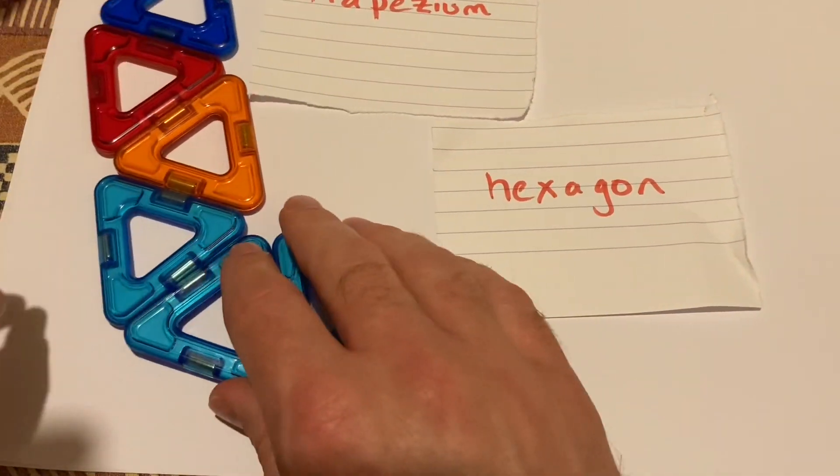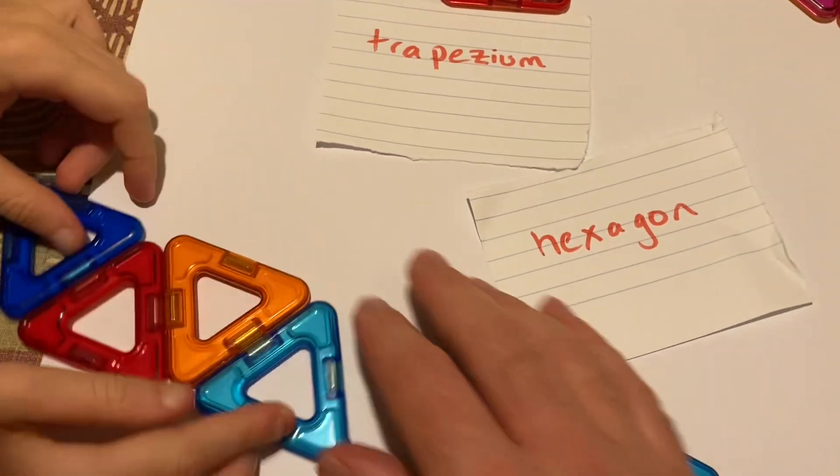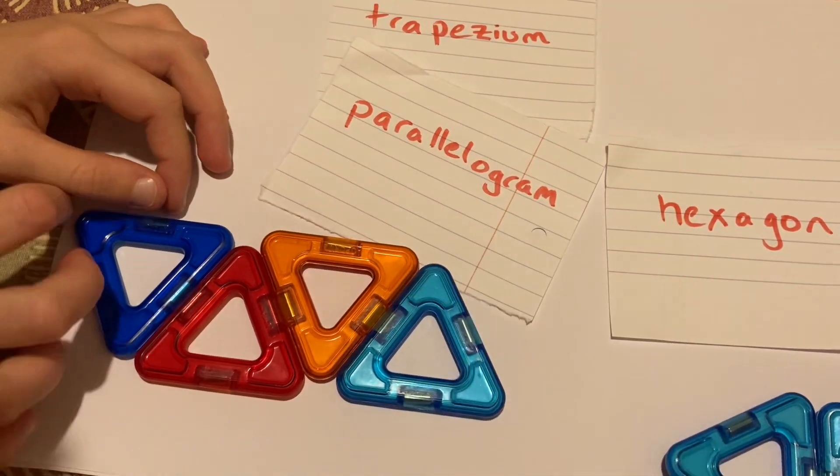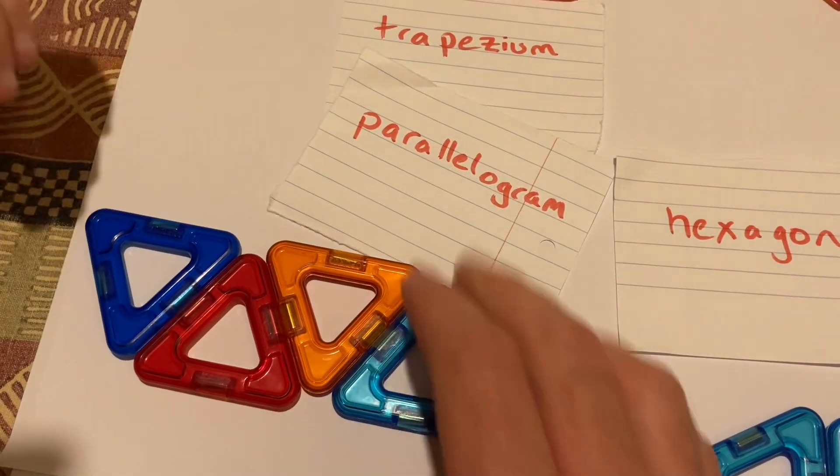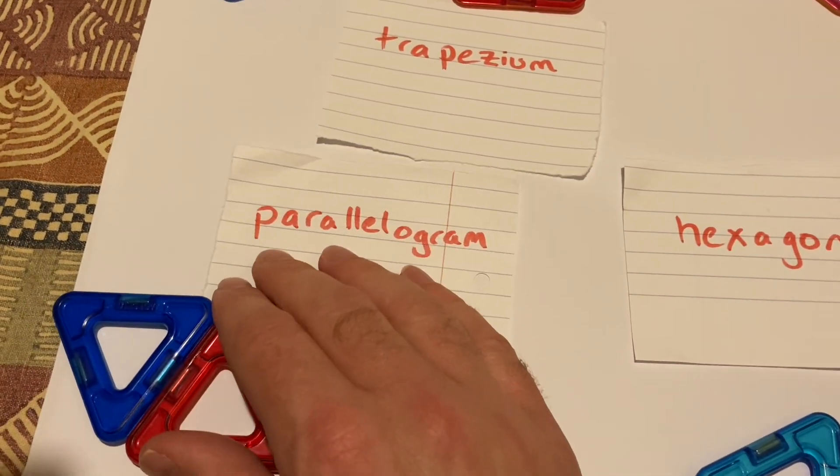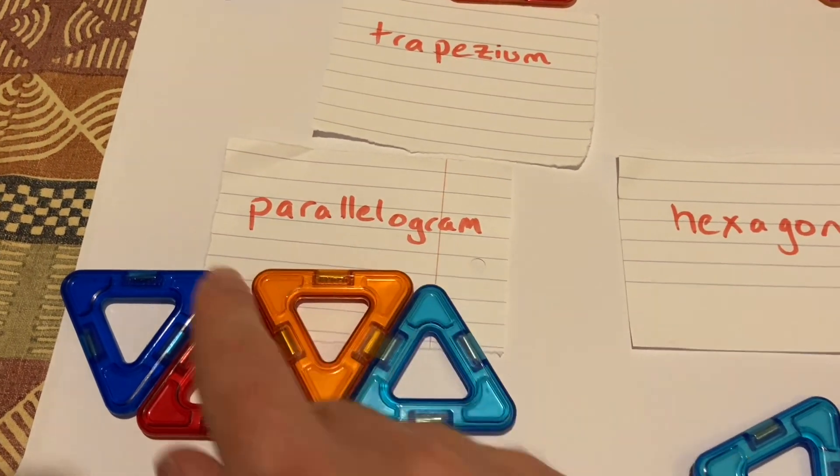They can also make a parallelogram. That was the other one I was going to get to. It's basically a rectangle but with corners. Yeah, it's a rectangle with parallel sides instead of right angles. So it's kind of a rectangle that's been shifted. You've got four sides.